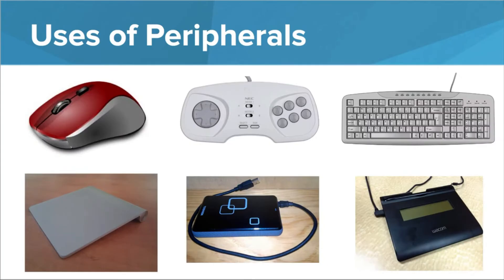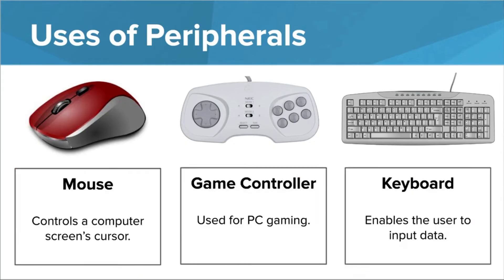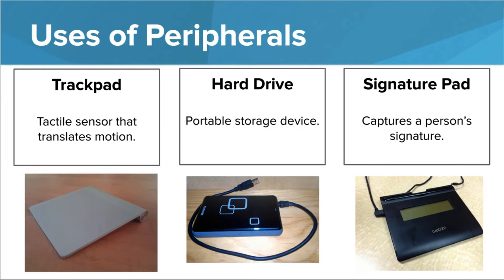How about these? Some may be familiar, but others could be a tad tougher to guess. A computer mouse can connect by wire or by Bluetooth — same goes for a game controller and a keyboard. A trackpad or touchpad is a sensor that can translate motion by either a special USB pen or your finger. External hard drives can be used as portable storage devices if your computer setup needs more memory. The signature pad might still be used in some businesses today, but many have been replaced with a touchscreen or a touchpad.